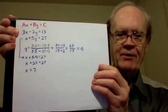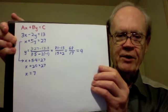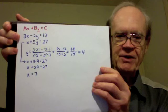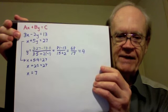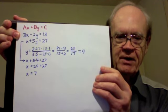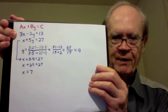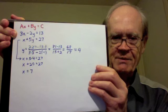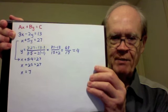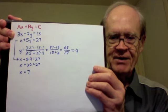Indeed, these are the correct values of x and y. We already know that they satisfy the second equation. We can verify that they satisfy the first equation. 3x minus 2y equals 13. That is, 3 times 7, which is 21, minus 2 times 4, which is 8. 21 minus 8 is indeed 13.